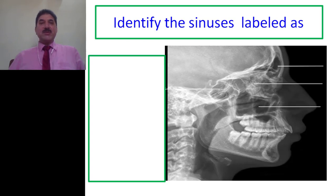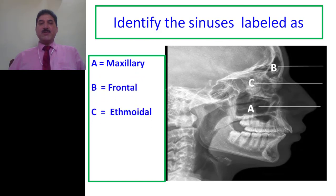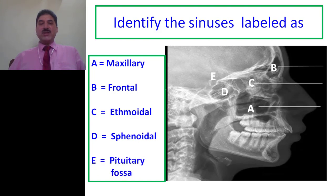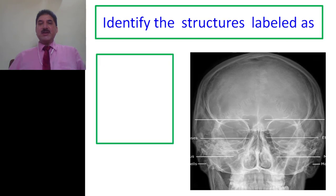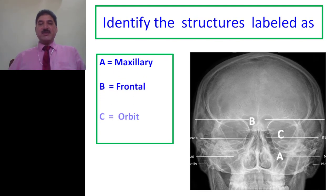Now let us check whether we can read this X-ray. Identify the sinuses labeled: A represents maxillary sinus, B represents frontal sinus, C represents ethmoidal air cells, D represents sphenoidal air sinus, and E represents the sella turcica which lodges the pituitary gland — also called the pituitary fossa. Next question: identify the structures labeled in the anteroposterior view. A represents maxillary sinus, B represents frontal sinus, C represents orbit, D represents right nasal cavity. The first X-ray was a lateral view of the skull and this second one is an anteroposterior X-ray of the skull.